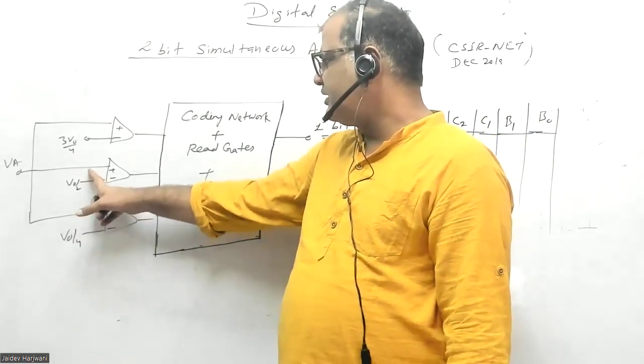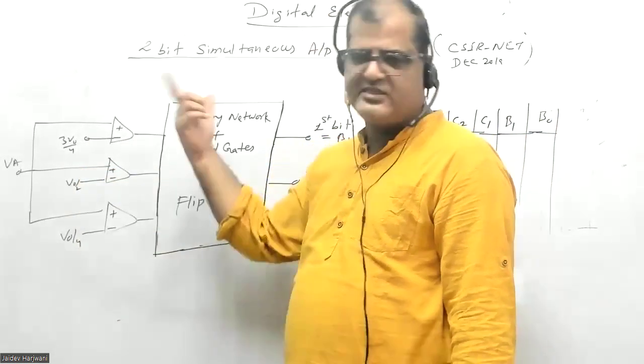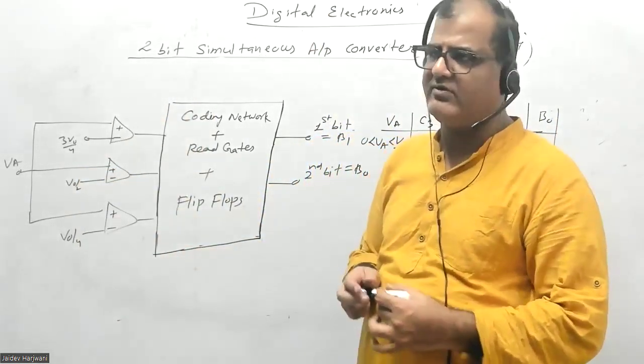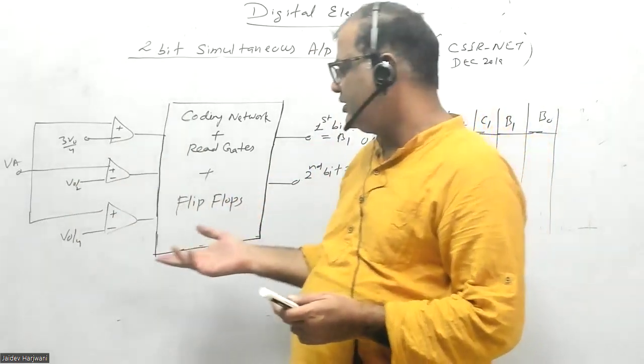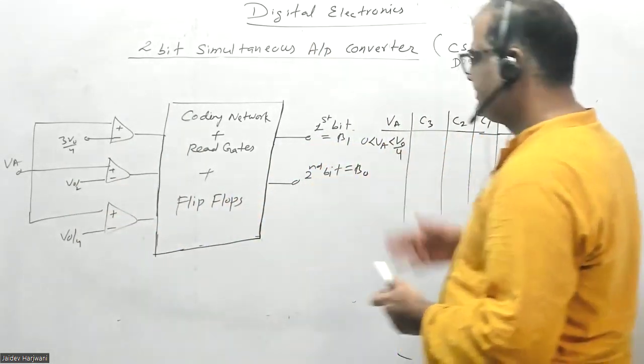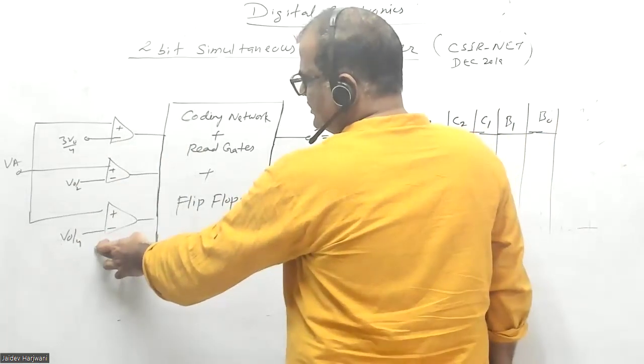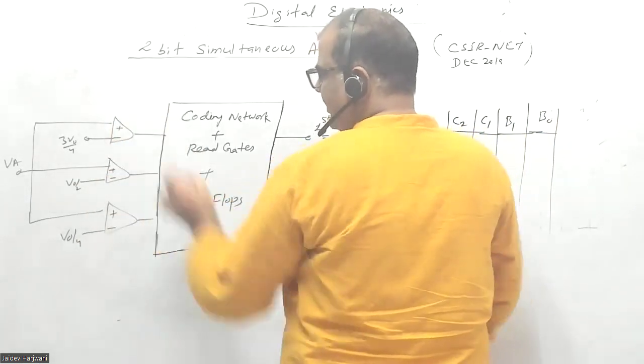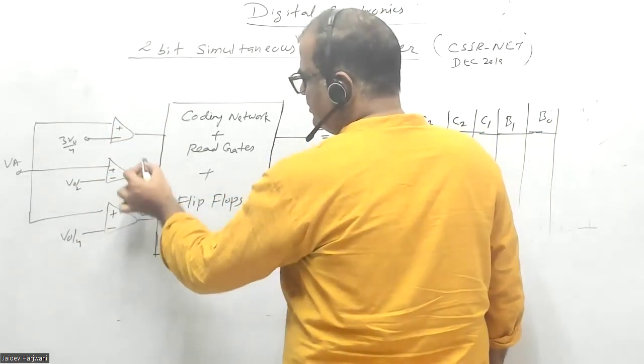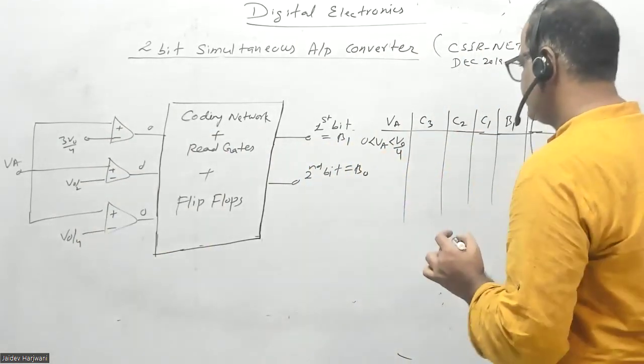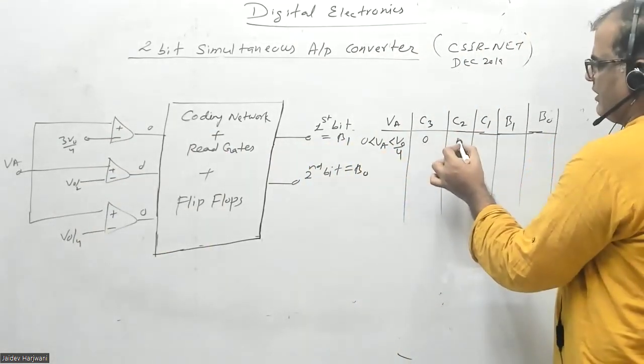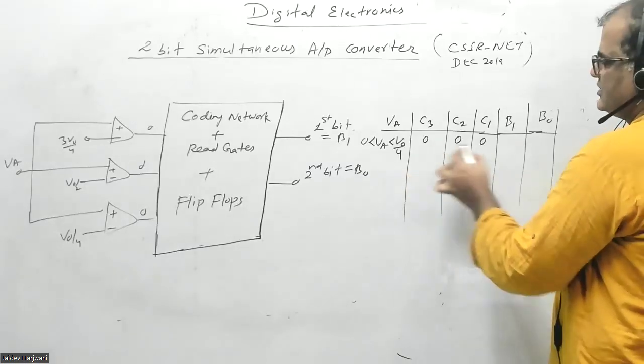Whenever the comparator analog input is higher than the reference voltage, it shows a high state. When input is less than V0/4, all comparators show 000, and this codes in binary as 00.